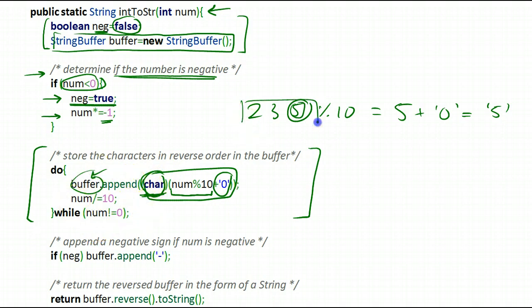Then I take my same number, 235, divided by 10, get rid of this 5. So this is integer division. And then I'm left with 23. And since 23 is not equal to 0, I keep on doing this process over and over again.